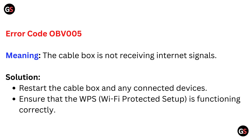Error code OPV005 meaning: the cable box is not receiving internet signals. Solution: Restart the cable box and any connected devices. Ensure that the WPS Wi-Fi Protected Setup is functioning correctly.